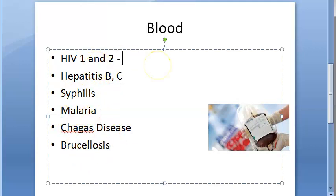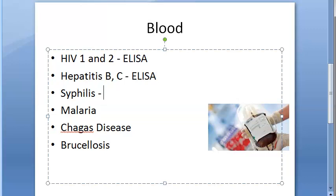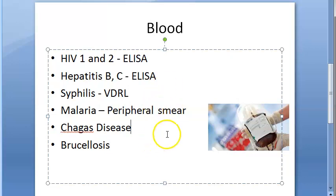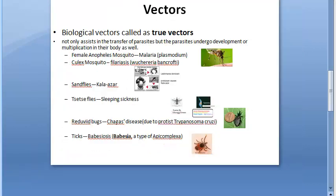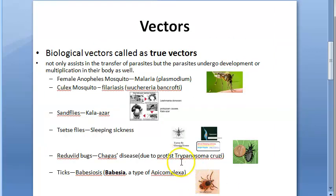How will they check for HIV? ELISA. How will they check for Hepatitis? Again, ELISA. How will they check for syphilis? VDRL. Malaria? Peripheral smear of the blood. Chagas disease and brucellosis have specific tests for these as well.